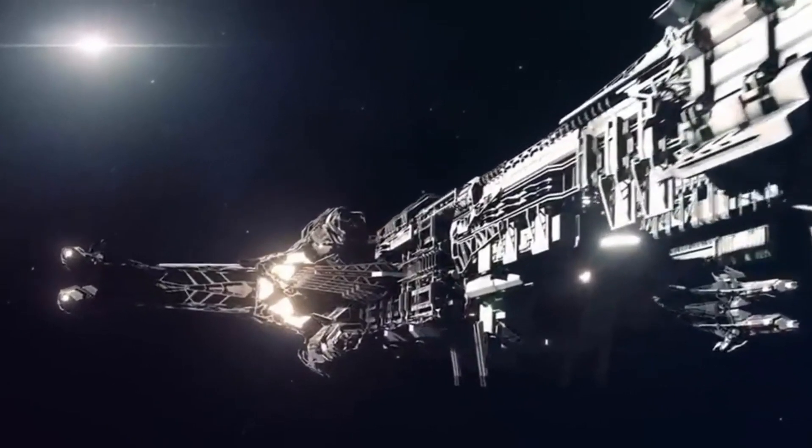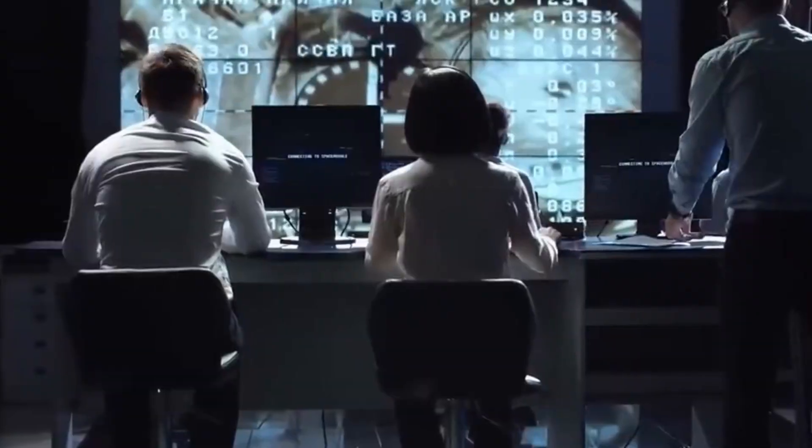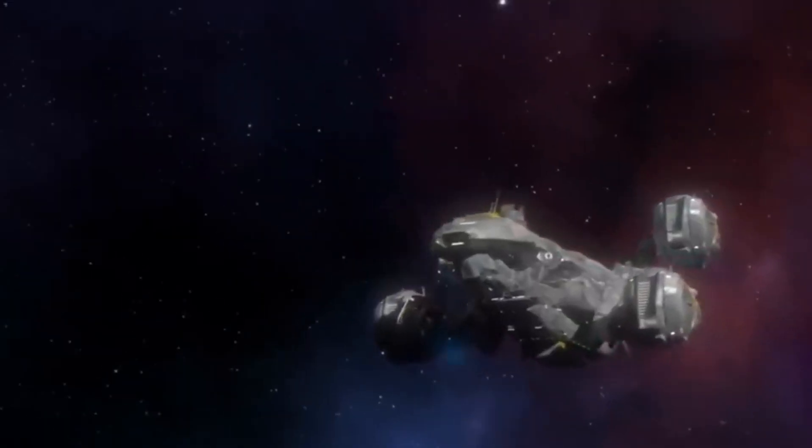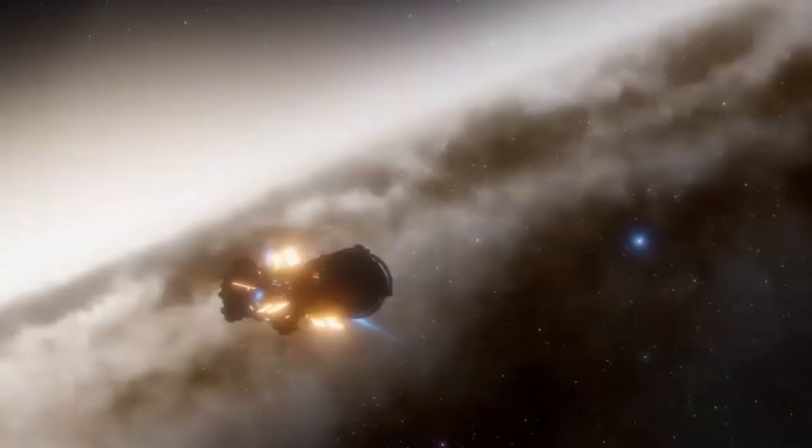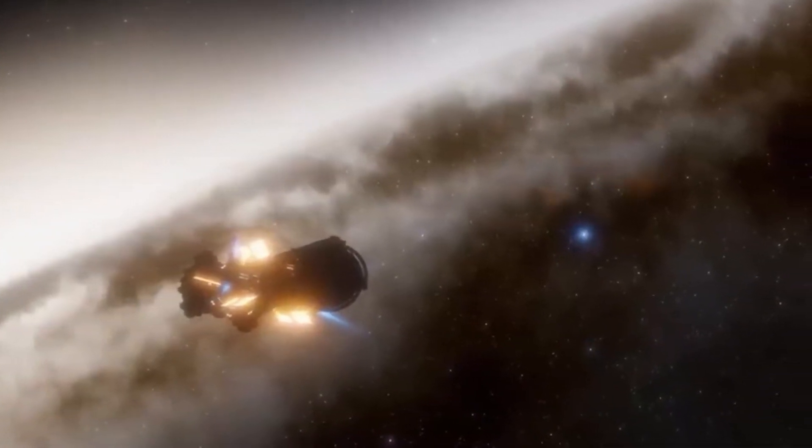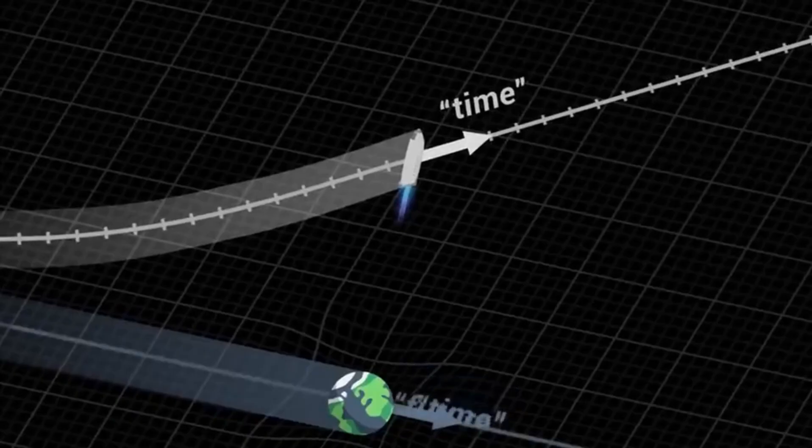This happens because, at such high speeds, there's a time dilation effect. The closer you get to the speed of light, the more noticeable it becomes. Besides, for our engineer, the space ahead of the ship will appear flattened into a blurry tunnel.